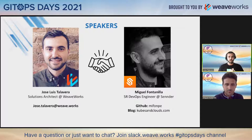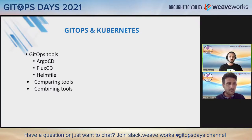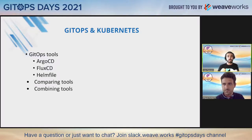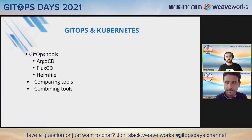So in the next few minutes, we'll be talking about a selection of GitOps tools — open source, most of them — explaining their pros and cons. We'll do a comparison of those tools around multiple areas like scalability, simplicity, and degree of automation. And last but not least, we'll go over Sender, which is Miguel's company, and their more detailed implementation of GitOps and how they combine some of those tools. Without further ado, over to you, Miguel.